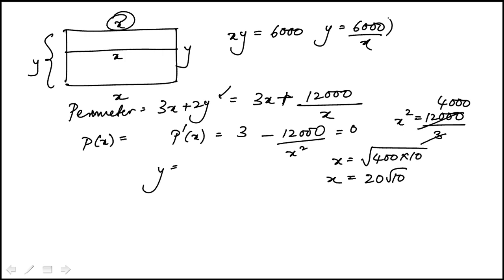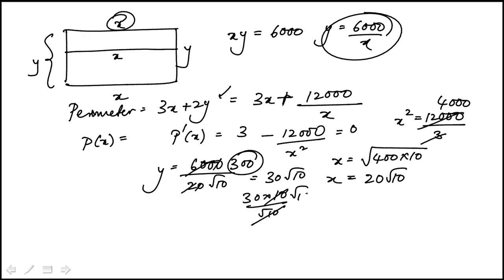The other dimension I can find by dividing 6,000 by 20 root 10. That's 300 over root 10, which becomes 30 root 10 when you rationalize the denominator.